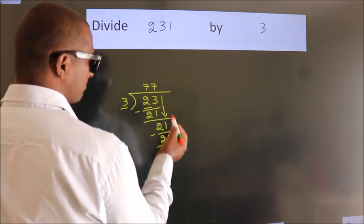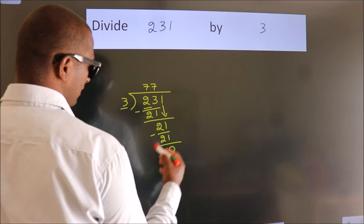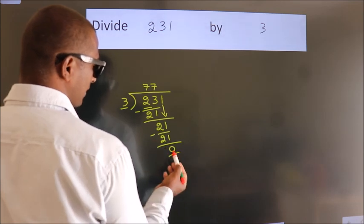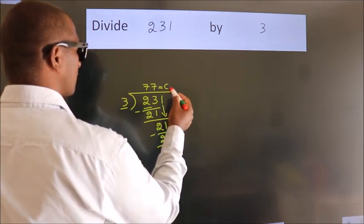After this, no more numbers to bring it down. And we got remainder 0. So this is our quotient, 77.